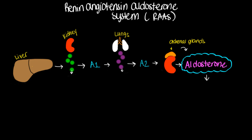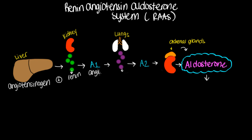It does that with this whole process of conversion and reactions. First thing: our liver releases a hormone called angiotensinogen into the blood. In response to that, the kidney is going to shoot out an enzyme called renin. Together, this enzyme renin and this hormone angiotensinogen react, and you're going to end up with angiotensin I.